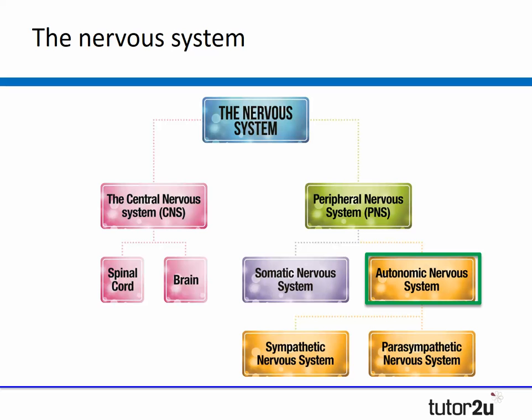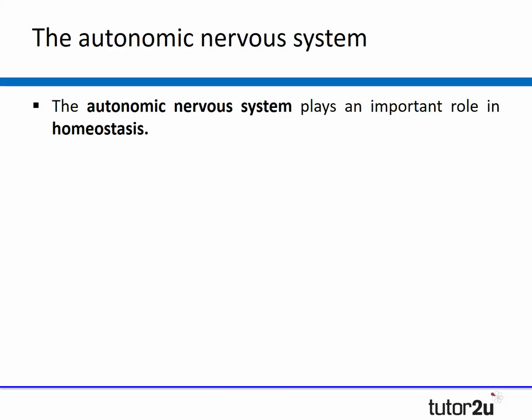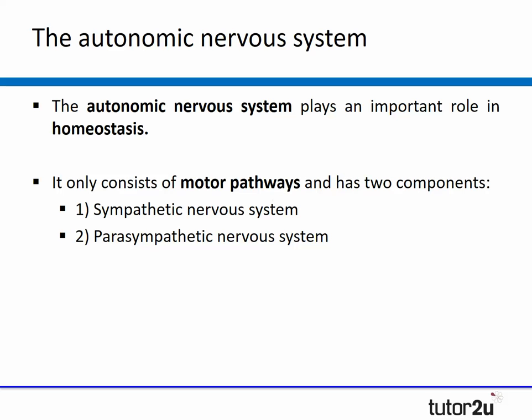Now let's look at the autonomic nervous system. It plays an important role in what's called homeostasis, which maintains internal processes such as bodily temperature, heart rate, and blood pressure. The autonomic nervous system only consists of motor pathways and it has two main components: the sympathetic nervous system and the parasympathetic nervous system.